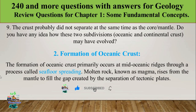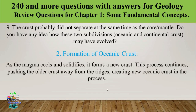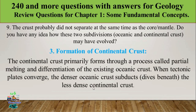The second cause is the formation of oceanic crust. Oceanic crust primarily forms at mid-ocean ridges through seafloor spreading. Molten rock — magma — rises from the mantle to fill the gap created by plate separation. As the magma cools and solidifies, it forms new crust, pushing older crust away from the ridge.